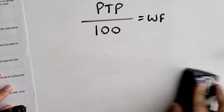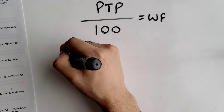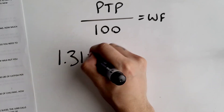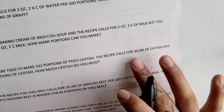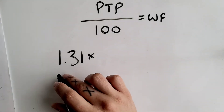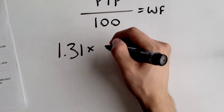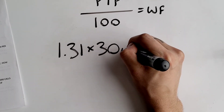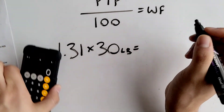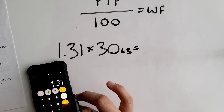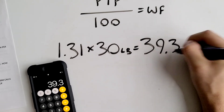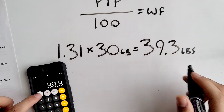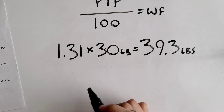So 131 divided by 100 equals 1.31 — that is your working factor. After you get your working factor, you want to multiply by your ingredients. So 1.31 times your ingredient — in this case the recipe calls for 30 pounds of catfish — so 1.31 times 30 pounds equals 39.3 pounds.